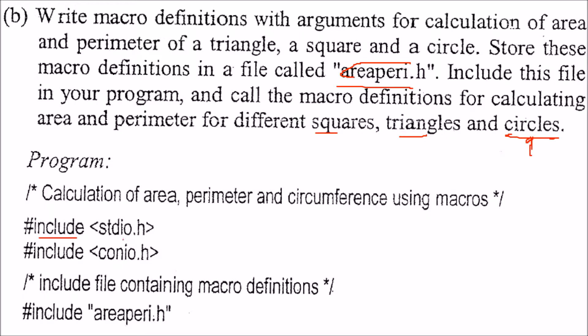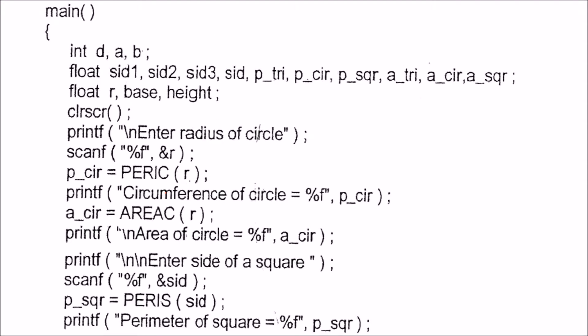This is hash include stdio conio.h. Then we are including the file which contains the macro definitions. I'll tell you what to write for circle. Similarly, you will write for triangles and square. So in this areaperi.h, we'll include it and we'll use it.